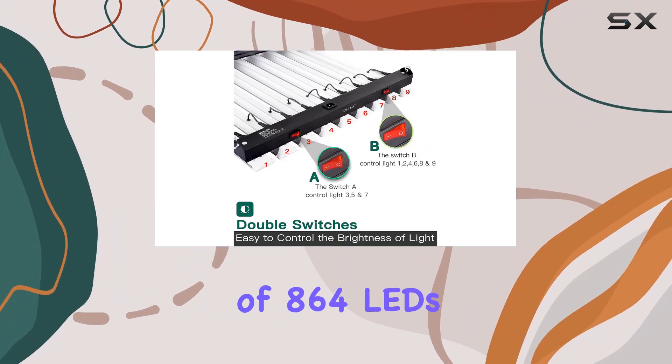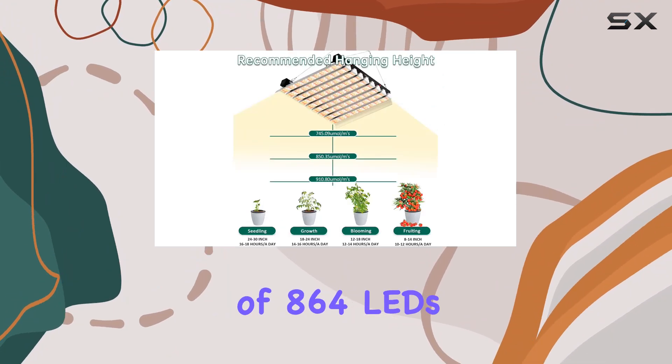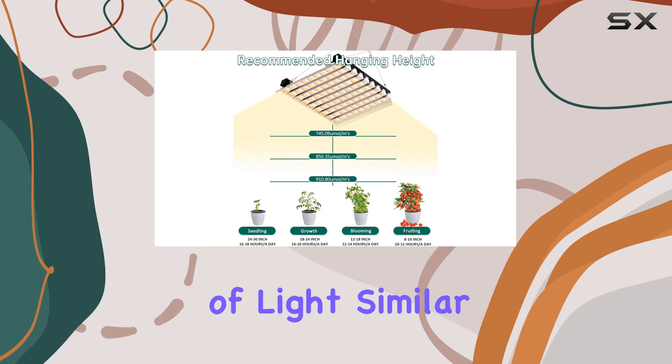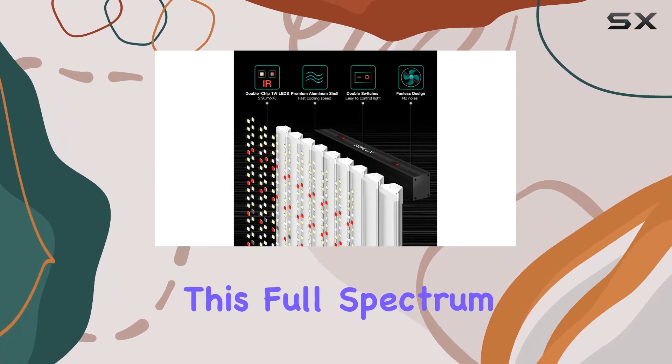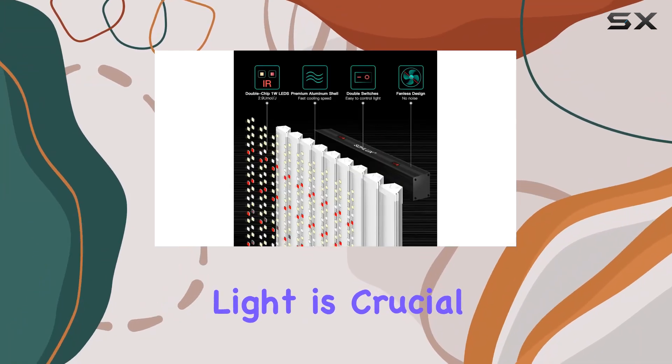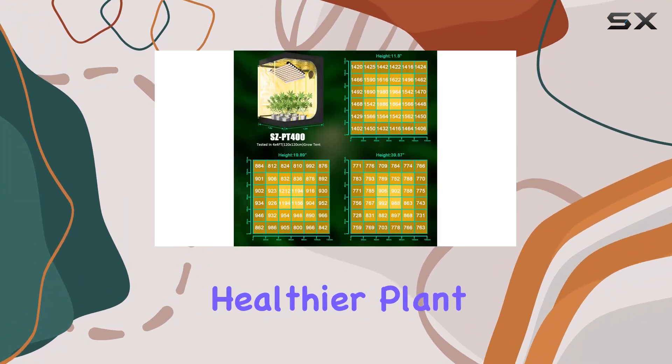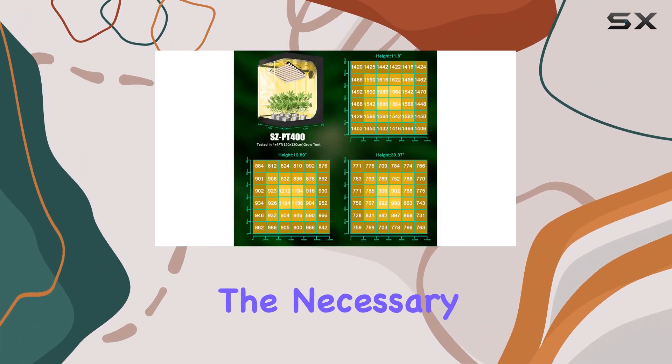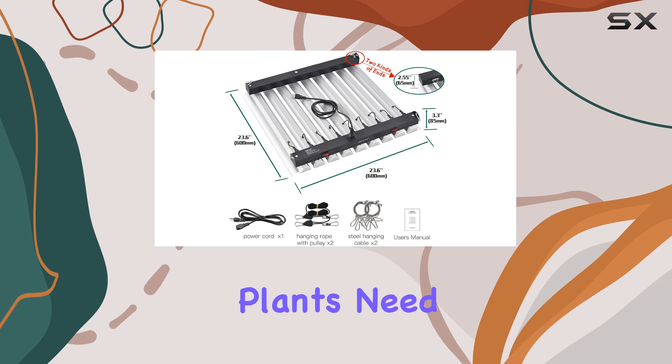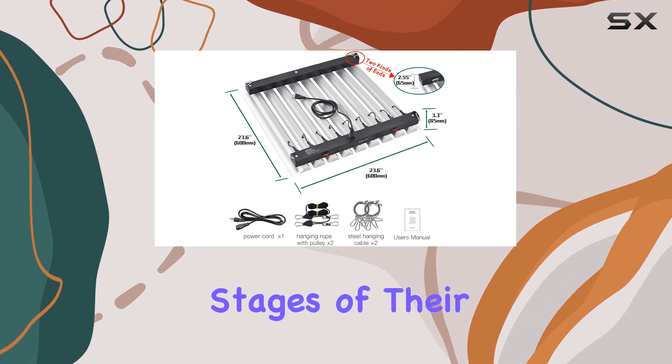The light source is composed of 864 LEDs, which provide a full spectrum of light similar to natural sunlight. This full spectrum light is crucial for photosynthesis and promotes healthier plant growth by supplying the necessary wavelengths of light that plants need during various stages of their growth cycle.